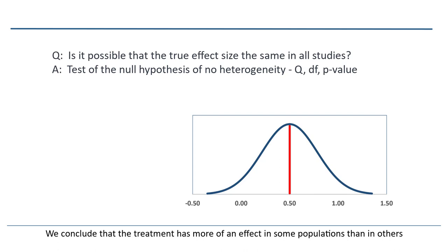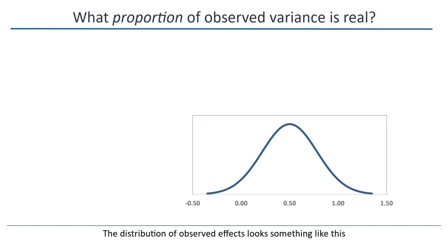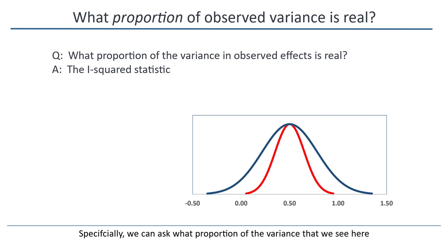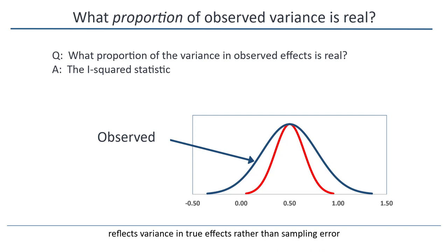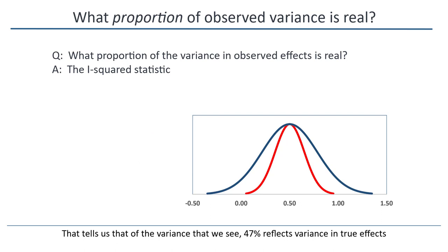A second question we can ask is how to understand the dispersion in observed effects. The distribution of observed effects looks something like this, while the distribution of true effects looks something like this. We can ask about the relationship between the two distributions — specifically, what proportion of the variance that we see in observed effects reflects variance in true effects rather than sampling error. This question is addressed by I-squared. In this analysis, I-squared is 47%, and that tells us that 47% reflects variance in true effects, while the other 53% reflects variance due to sampling error.